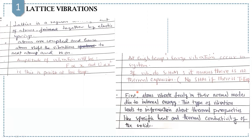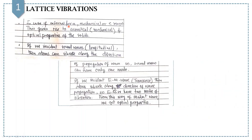Please remember, atoms vibrate freely in their normal modes. Due to internal energy, this type of vibration leads to information about thermal properties like specific heat and thermal conductivity of solids. In case of external forces — which could be mechanical or electromagnetic — this gives rise to acoustical and optical properties of solids.